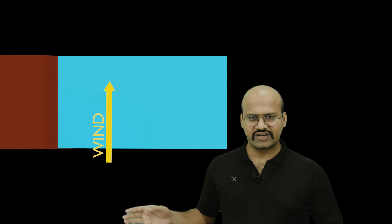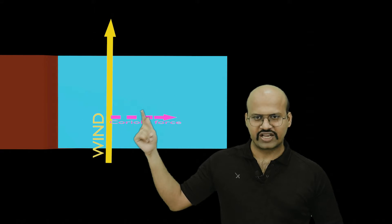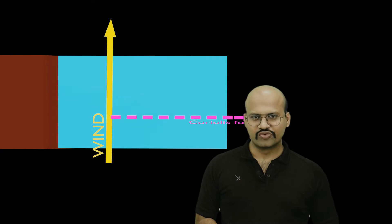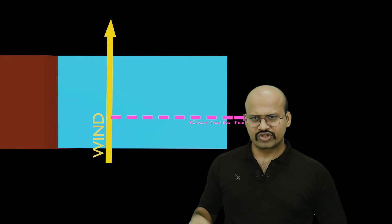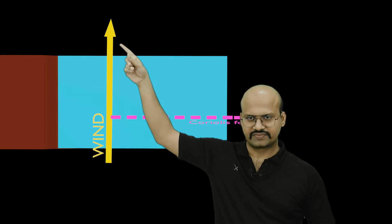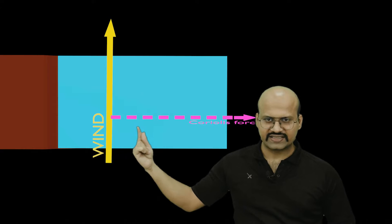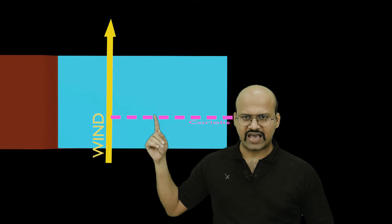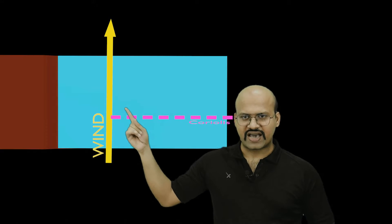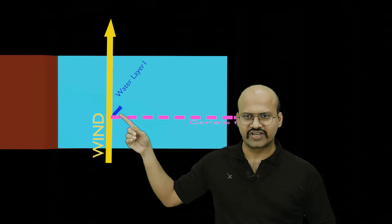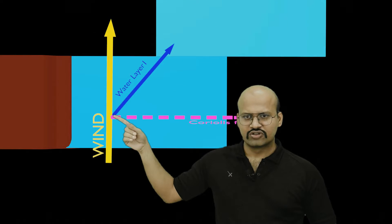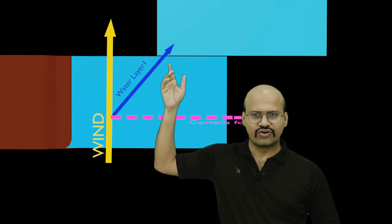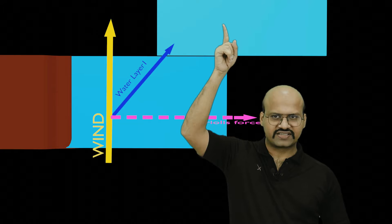Now we will see what happens when wind blows over ocean water and Coriolis force is also acting. In the northern hemisphere, the Coriolis force acts perpendicular to the wind direction. The net force on the topmost layer is therefore at 45 degrees between the wind force and the Coriolis force, and so the topmost layer moves in that direction — 45 degrees to the wind.